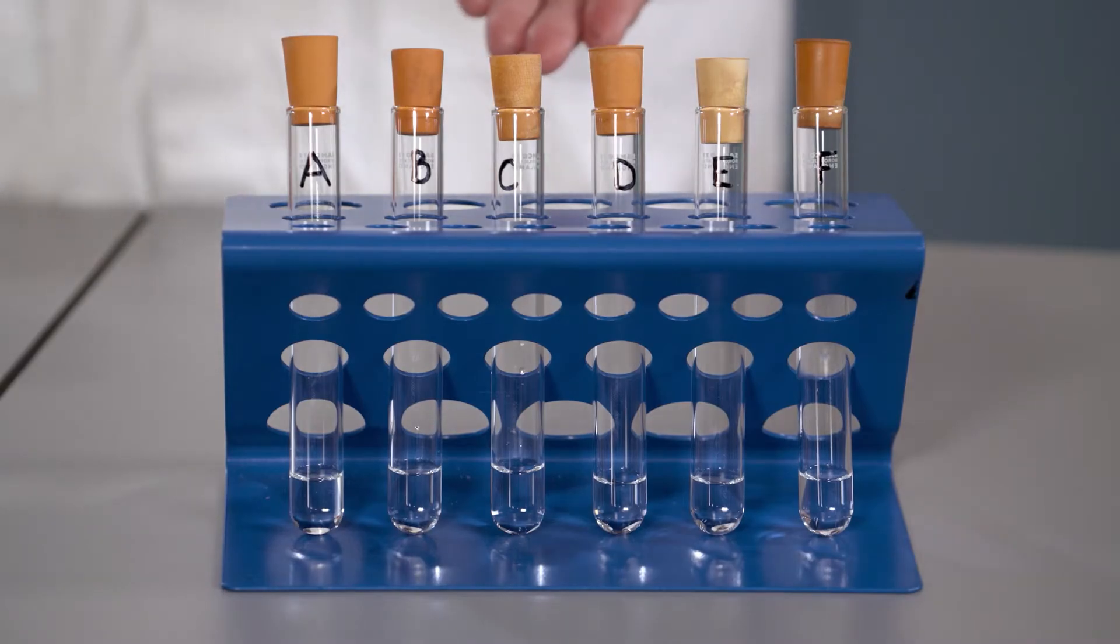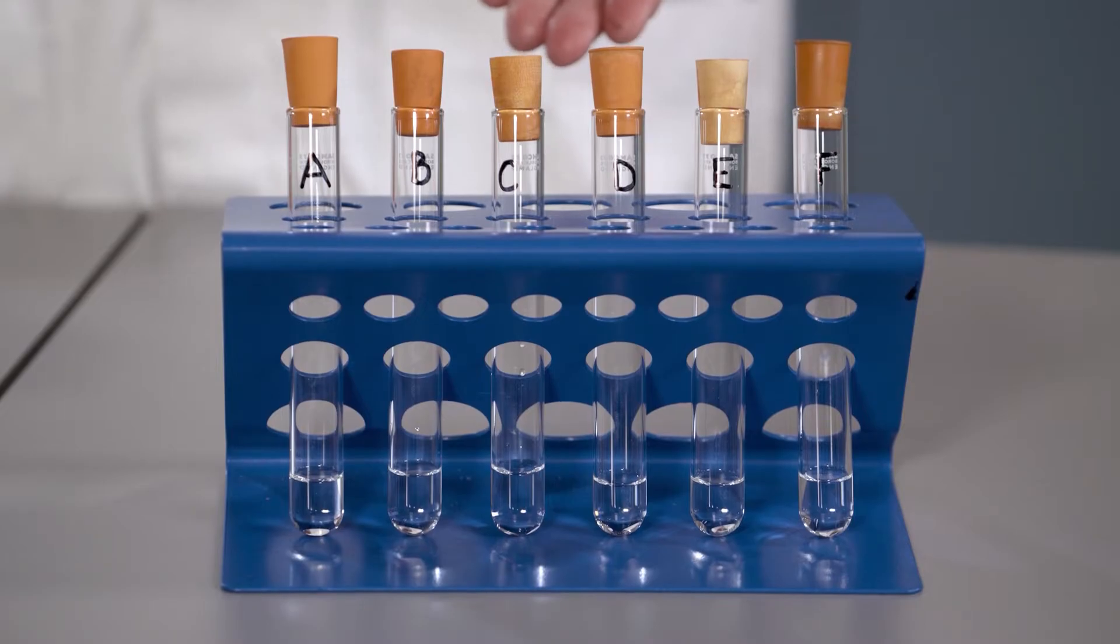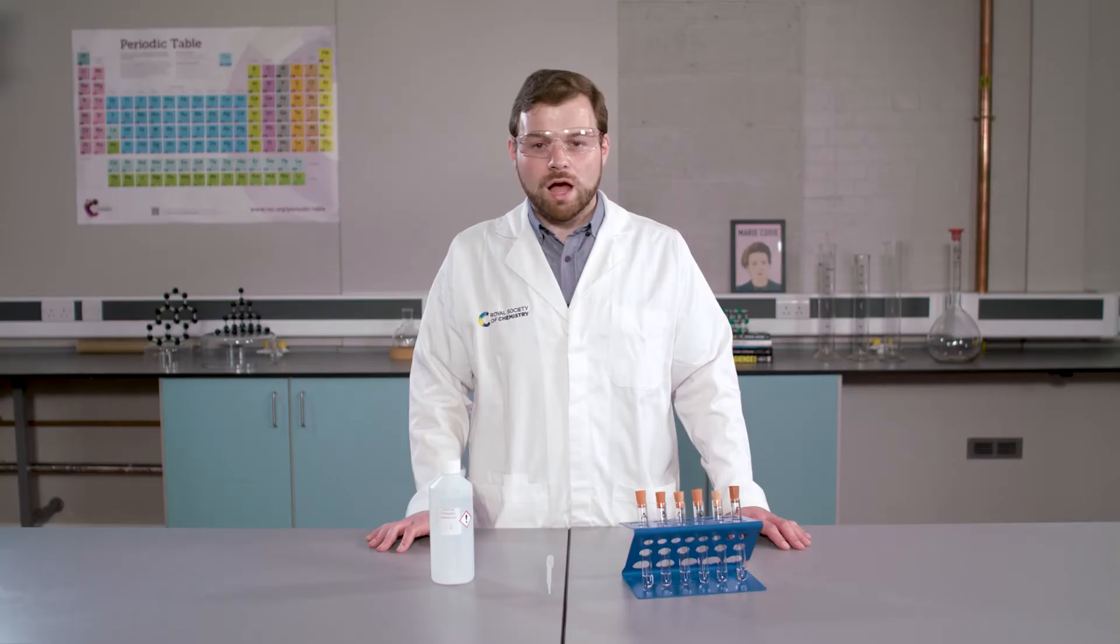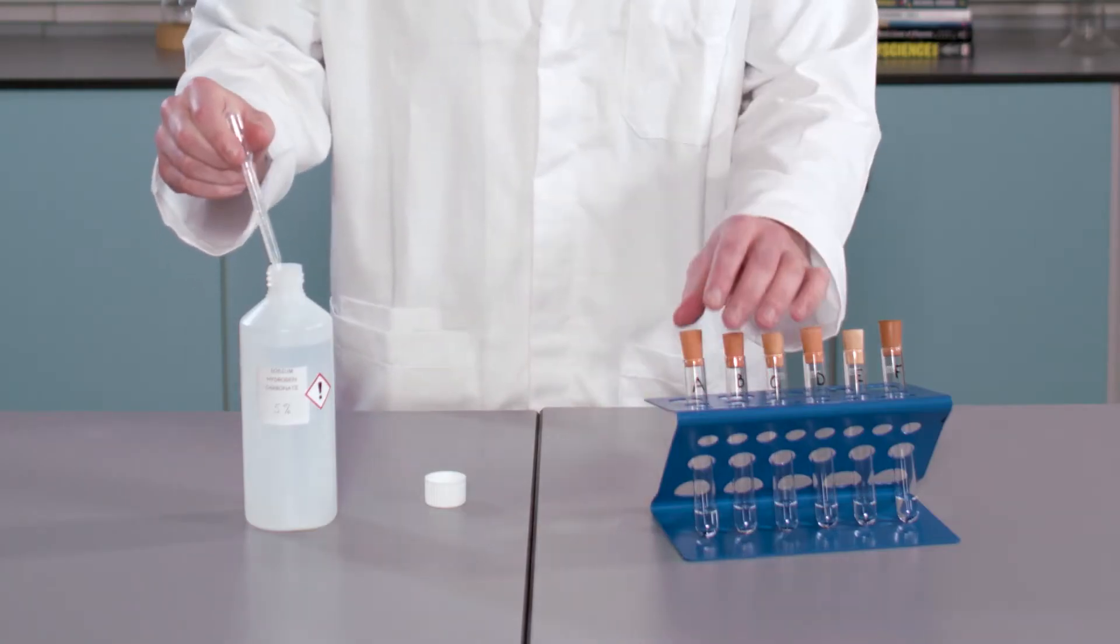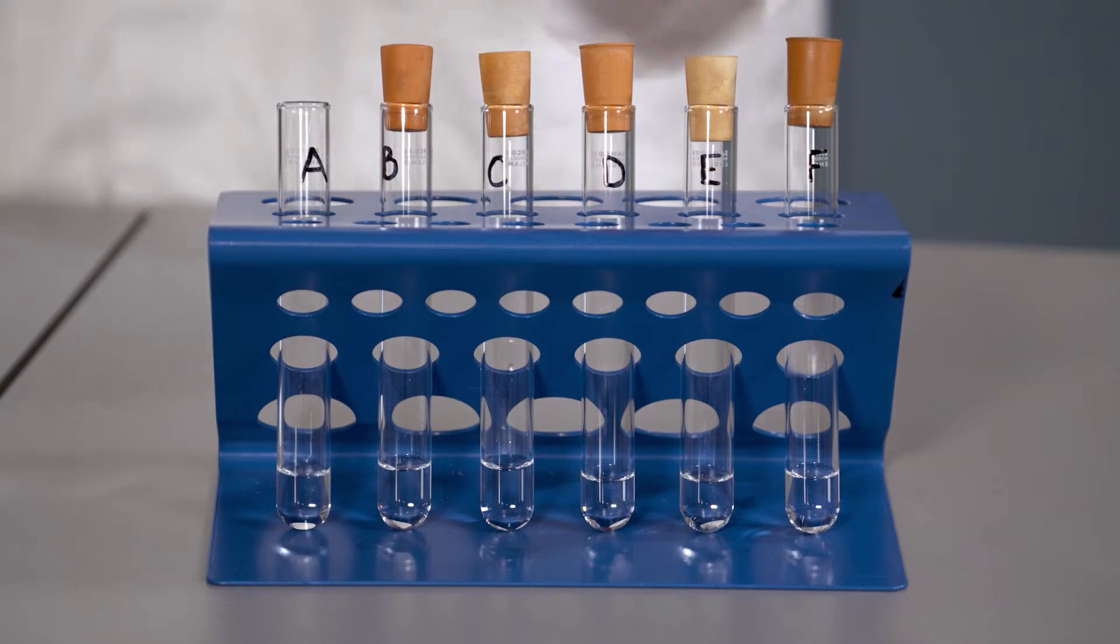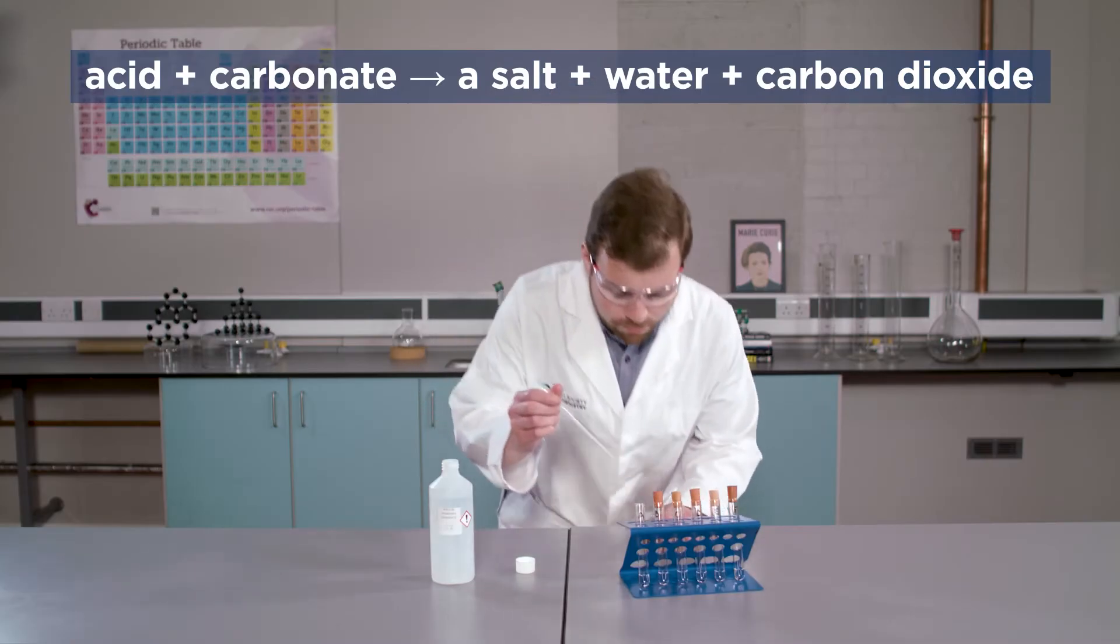Here, I have labelled 6 test tubes A, B, C, D, E and F, and added 2cm cubed of each sample into them. I am now going to add a few drops of sodium hydrogen carbonate solution to each test tube. Think about what we would expect to see for a positive result. Make sure you record your observations in a table.